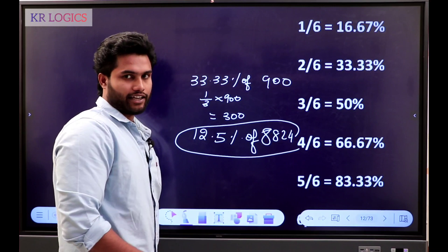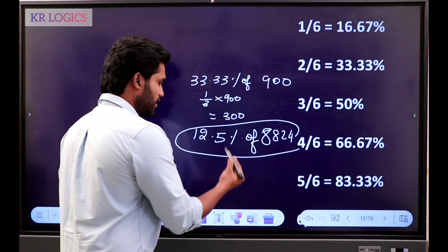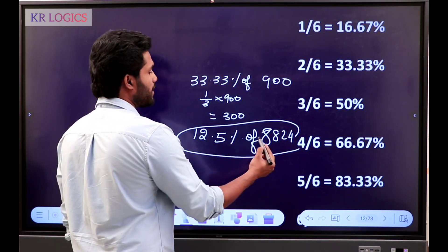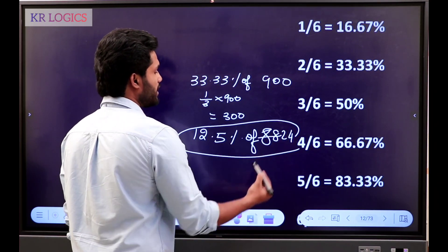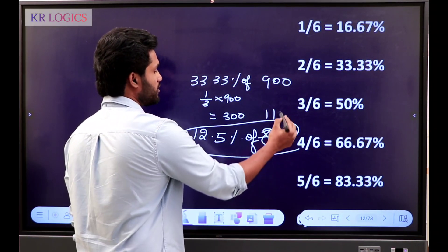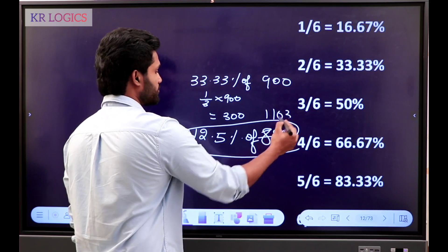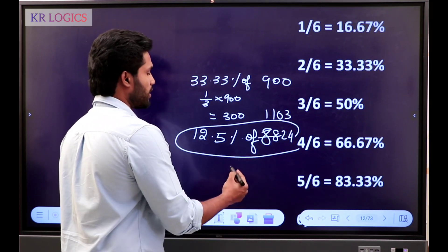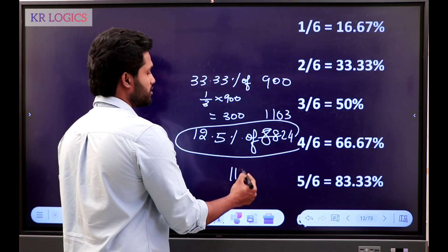8824 — easier. You have to value 1 by 8. 1 by 8 of 8824, so the answer is 1103.